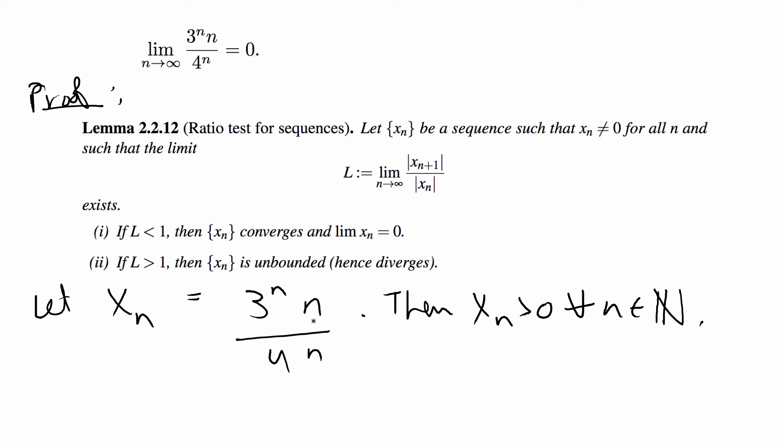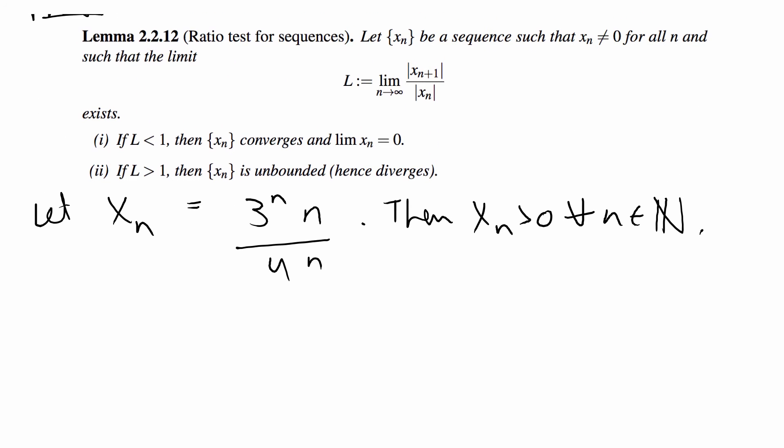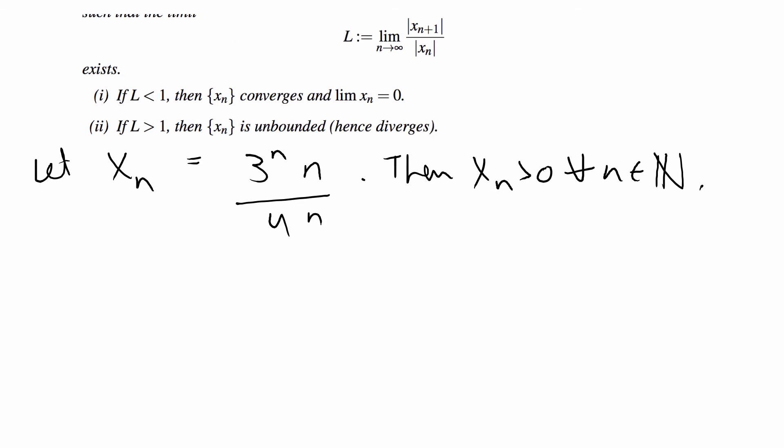The only way this could be 0 would be if n is 0, and n is never going to be 0, and a number to an exponent will never be 0 either. So we know we can apply the ratio test for sequences, so now we're going to take the limit of x_{n+1} over x_n.